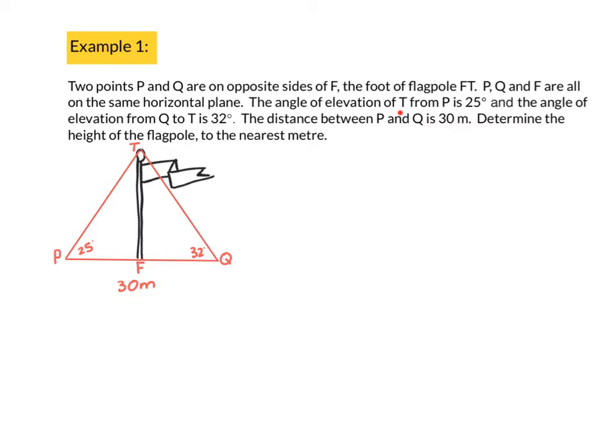The angle of elevation of T from P is 25 degrees. Now T will be the top of the flagpole. So the angle of elevation from the horizontal up to T is 25 degrees. If they're using the word from, from is where the angle originates from. So it says of T from P, it means the angle is starting at P and going up. Then it says the angle of elevation from Q to T is 32 degrees. So from Q to T, I've got an angle of 32 degrees. The distance between P and Q is 30 meters. Determine the height of the flagpole. Now I find sometimes this information seems a bit confusing. However, looking at the picture makes it a little bit clearer.